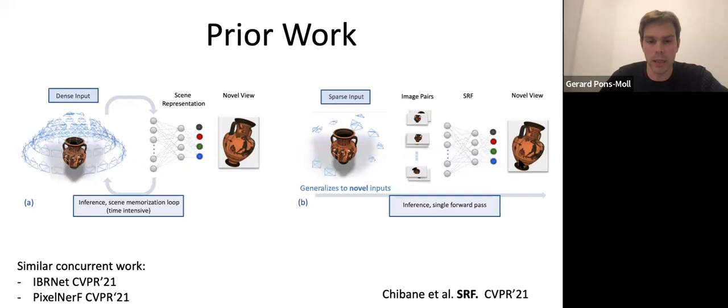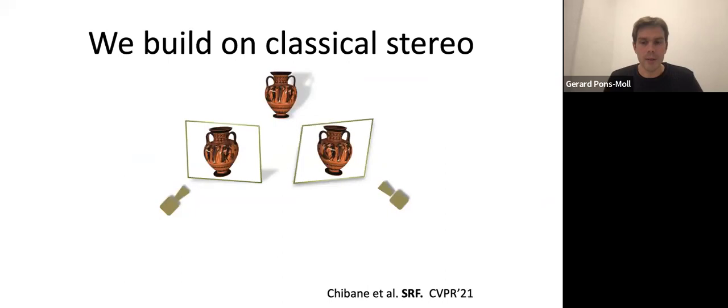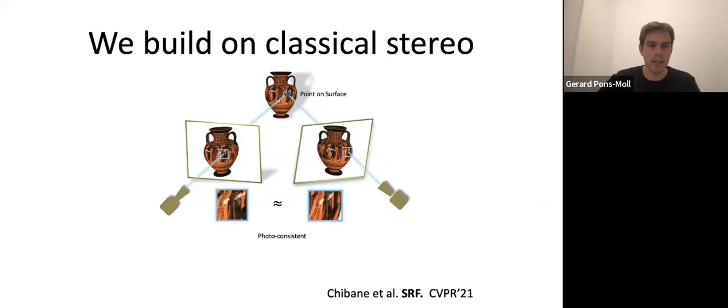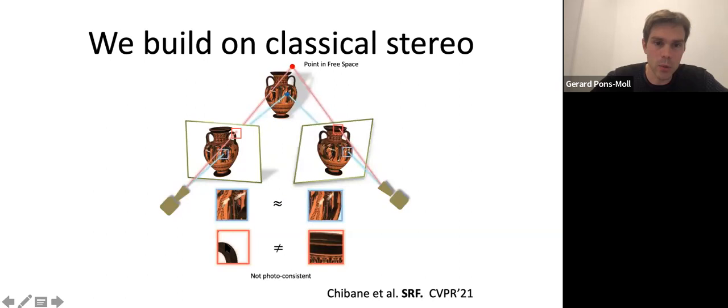I should mention this work has some similarities to concurrent work like IBRNet or PixelNeRF that came at the same conference. Here we build on classical stereo: the basic idea is that if a point is on a surface, when you project it into different viewpoints and look at the patches, they will be photoconsistent. However, if you query on a point not on the surface, the patches will not be photoconsistent. That's the key idea of classical stereo — it's reasoning about the 3D structure of the scene, not depending on the particular scene.